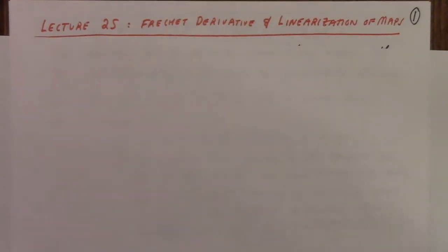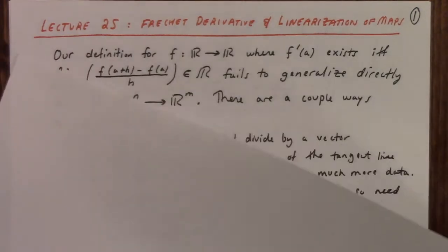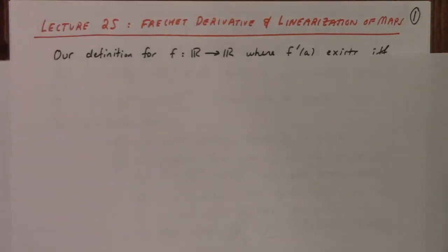Okay, so this is lecture 25 on the Frechet derivative and linearization of maps. So the basic problem here is to ask the question: what is the derivative for functions that have both a vector input and a vector output? How do we understand the differentiation in that context?